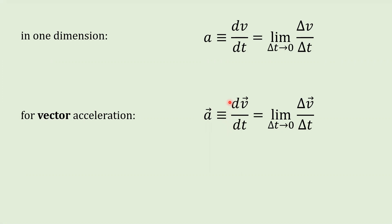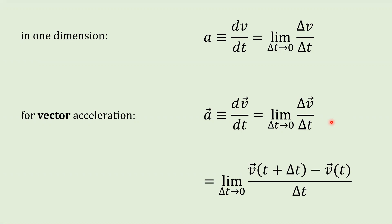Taking a cue from what we did with velocity in a previous presentation, let's define vector acceleration as the time derivative of vector velocity. In the numerator of this ratio, we have a change in velocity — final minus initial — over some small time interval. If you subtract two vectors, you get another vector. So delta v is a vector divided by a scalar, and dividing by delta t is the same as multiplying by one over delta t — we know that just scales the vector up or down. There's nothing mysterious about this.